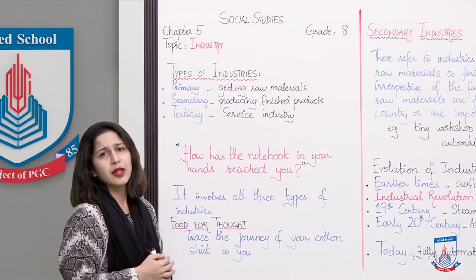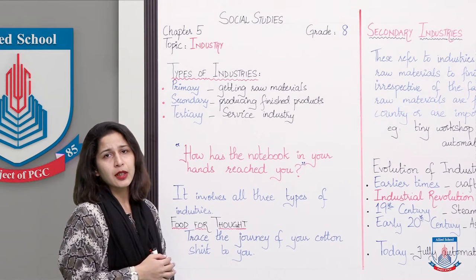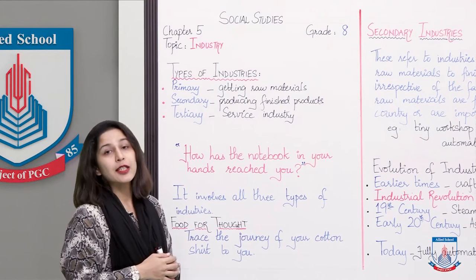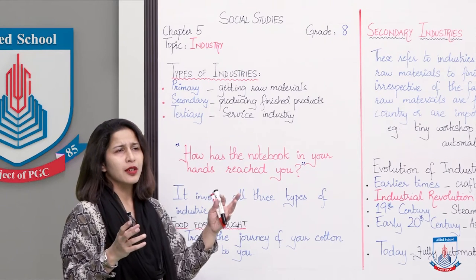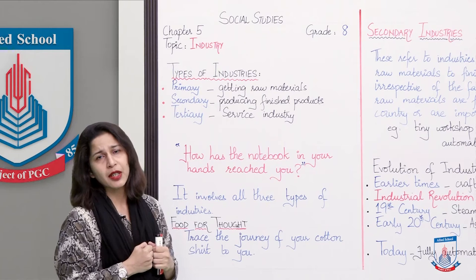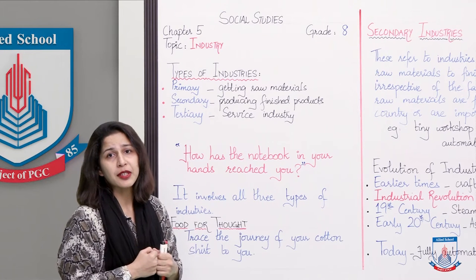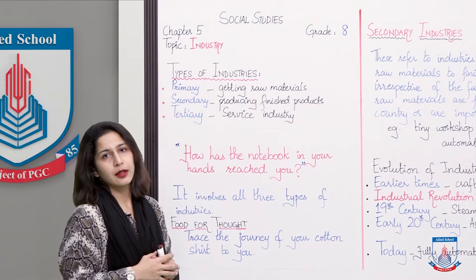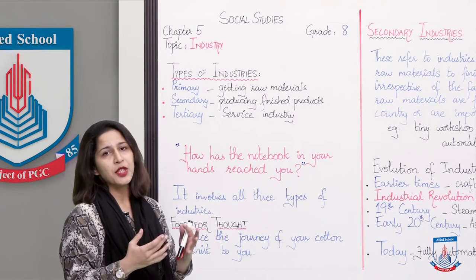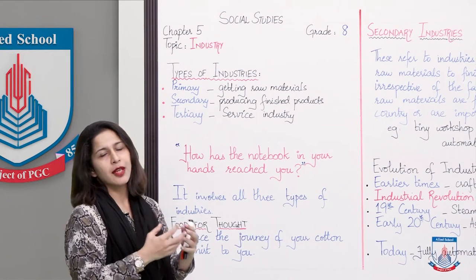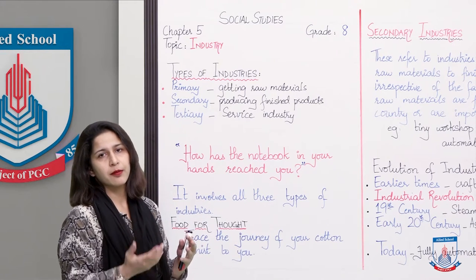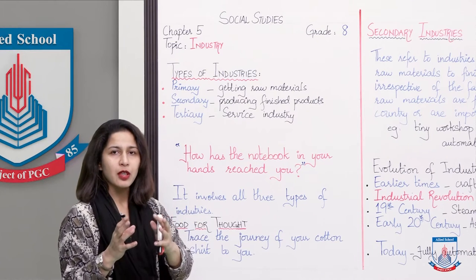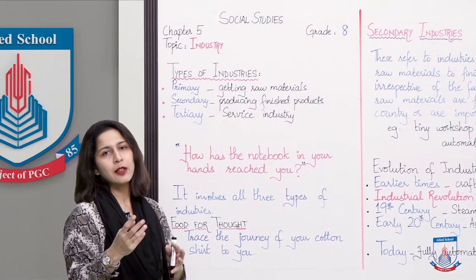Now, I have a question for you all. Have you ever wondered how the notebook in your hands reached you? It's a long process. The paper in your notebook comes from trees — that's the raw material. Cutting the tree, getting the wood, that's primary industry. Now, transporting that raw material, that wood, to an industry for processing is basically tertiary industry, as transport is a service-providing industry.